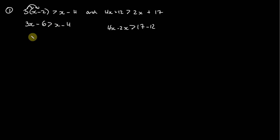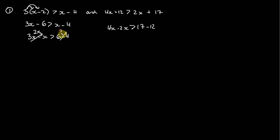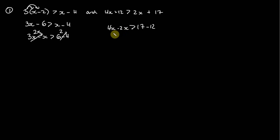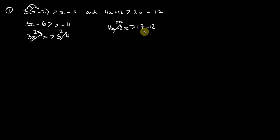On the left we subtract x from both sides and add 6 to both sides, so we get 3x minus x is greater than 6 minus 4. That equals 2x is greater than 2. And on the right, 2x is greater than 5, since 17 minus 12 is 5.